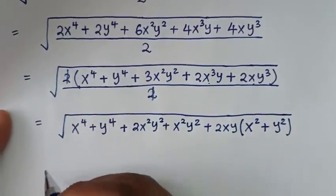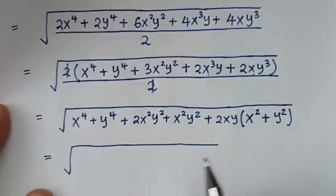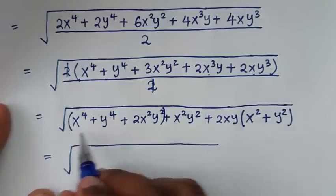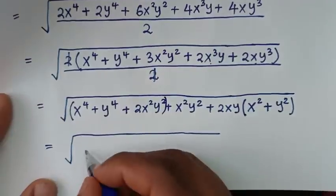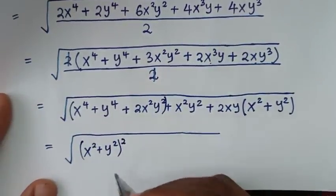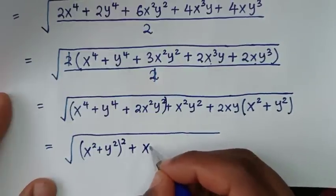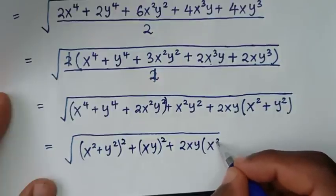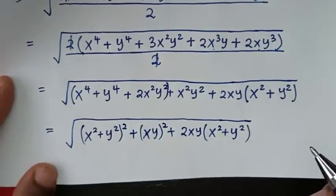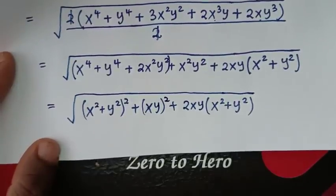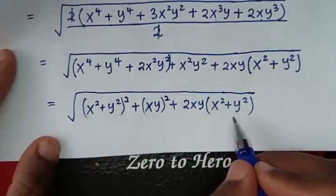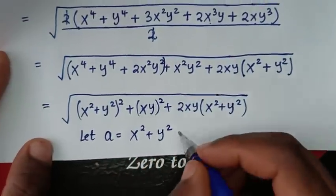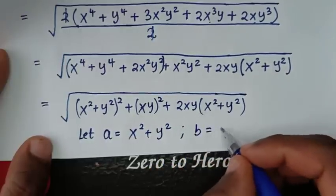In the next step it will be equal to the square root of x⁴ plus y⁴, plus 3x²y² which splits as 2x²y² plus x²y², then plus 2xy taken out as a factor giving 2xy(x² + y²). We can see that x² + y² is common, so we let A equal to x² + y², and also xy is common so we let b equal to xy.